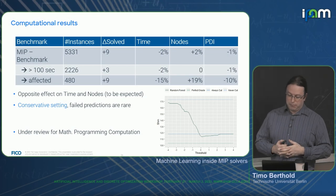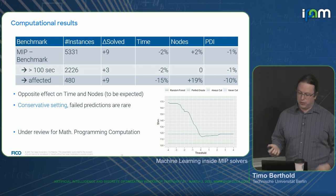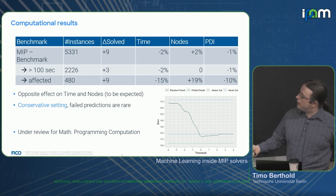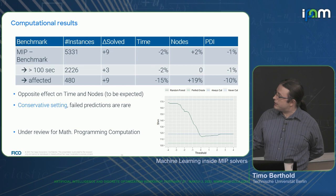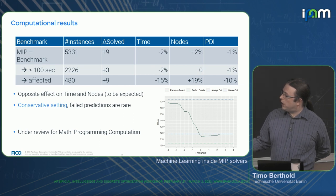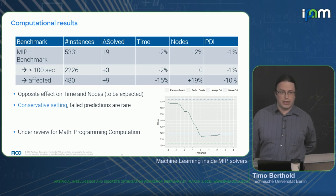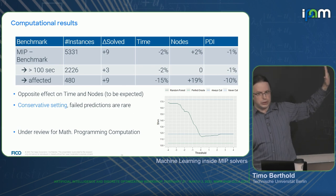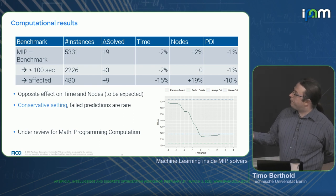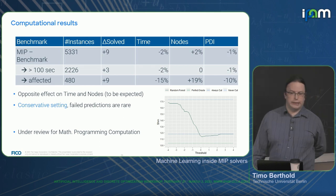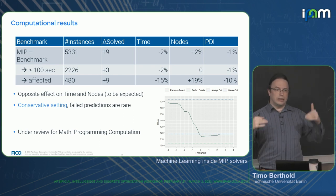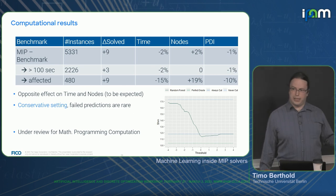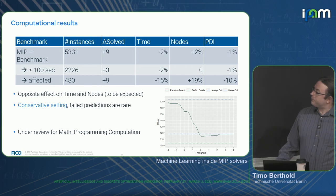We got nice results: an overall saving of 2% of time on our full MIP benchmark set. Looking only at affected instances, the overall run time reduces while the number of nodes increases — which is expected, since switching off local cuts means you save less nodes but also spend less time per node.